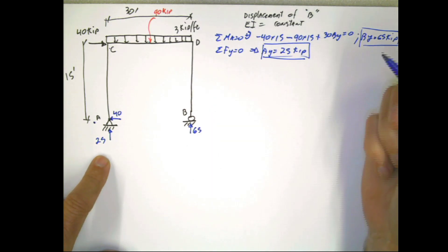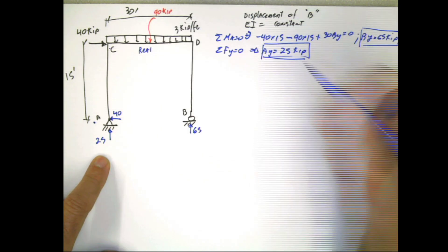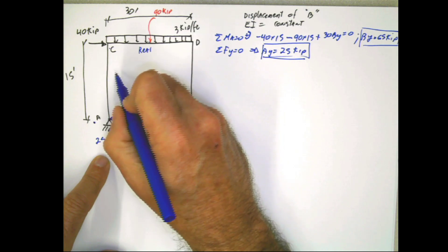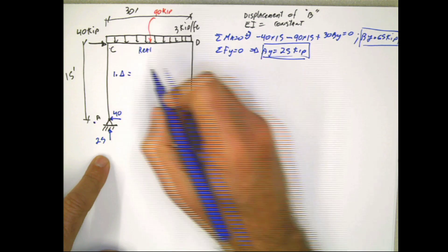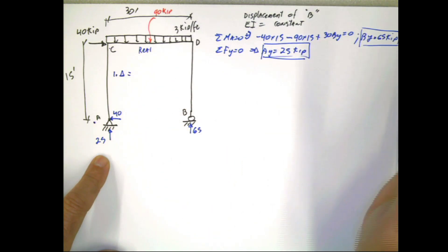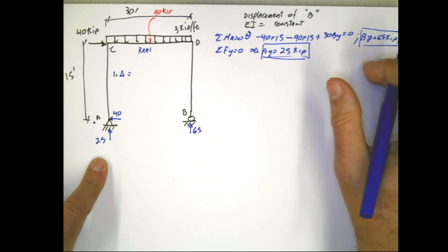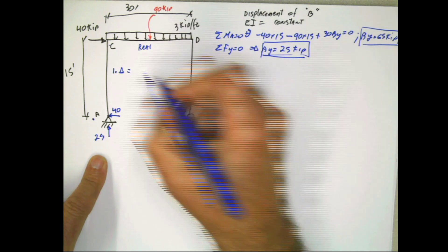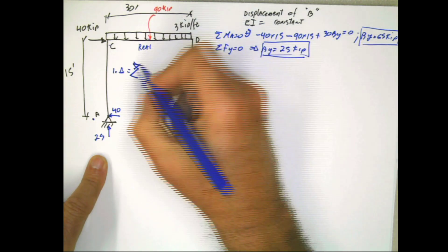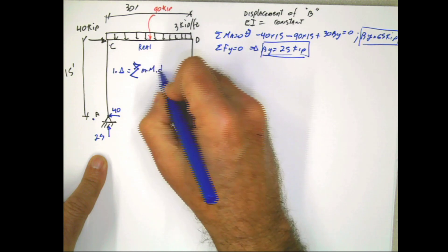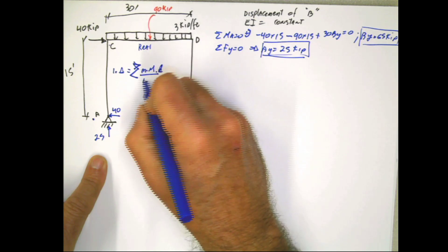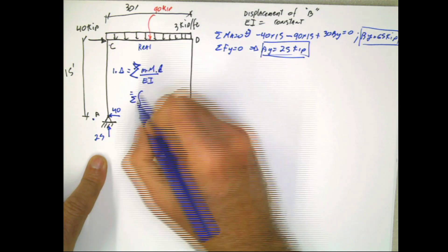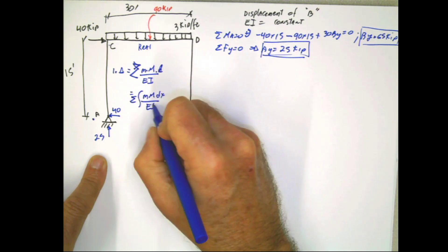Remember, this is the real structure. The first step is doing statics and calculating the internal forces. But what we're interested in is the displacement, so we have 1 times delta. As I proved in the previous video on frames, the main effect is the one produced by moment. We're just going to take into account the internal moment: integral of M·m·dx divided by EI, which is constant.